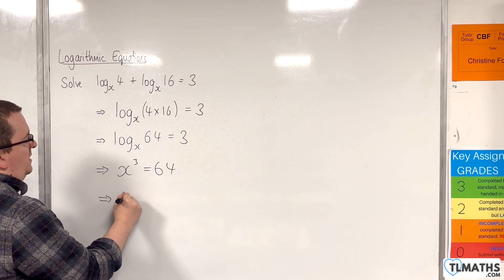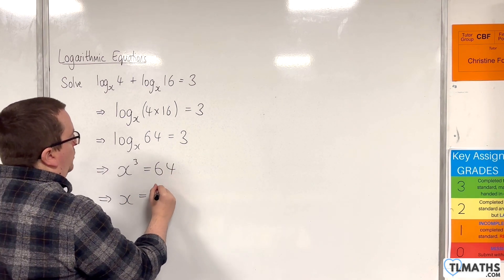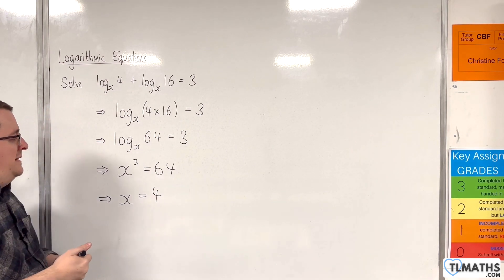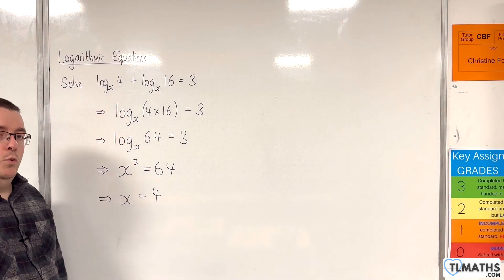Cube rooting both sides, x would have to be equal to 4. So x equals 4 solves the original equation.